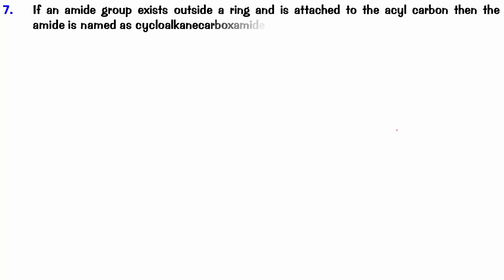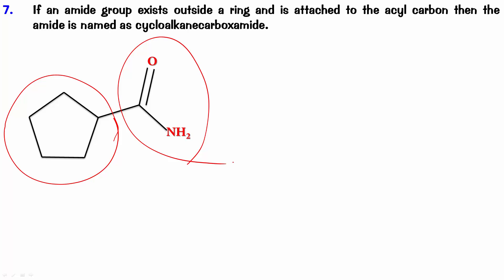The next point is: if an amide group exists outside a ring and is attached to the acyl carbon, then the amide is named as cycloalkanecarboxamide. So what would you name this as? This is going to be cyclopentanecarboxamide.